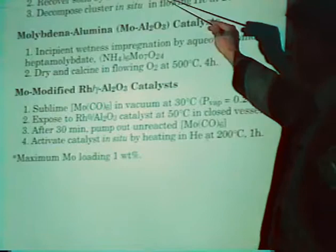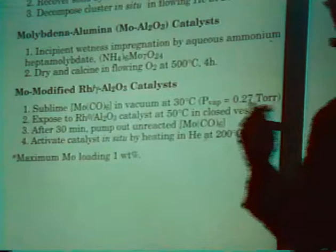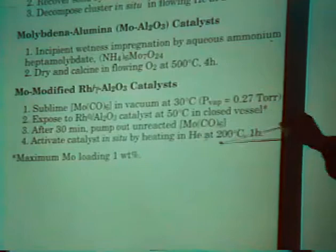For the molybdenum-modified rhodium catalyst, we prepared the cluster-derived rhodium on alumina catalyst, then sublimed molybdenum hexacarbonyl onto its surface by exposing the rhodium on alumina catalyst to the vapor at 50°C — a temperature at which molybdenum carbonyl would tend to desorb if merely physisorbed on the carrier. After 30 minutes of exposure, we pumped out the unreacted hexacarbonyl and activated the catalyst by heating at 200°C in helium.